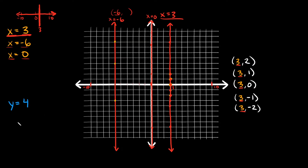It works the same way with y's. Whenever you have y is equal to a number, you can think of it the same way. Where are all the y's equal to 4? Well, on the y-axis, going up 1, 2, 3, 4 — your y-coordinate is equal to 4 there, and right there, and right there. All along this horizontal line, all your y-coordinates are equal to 4. So this would be y is equal to 4.